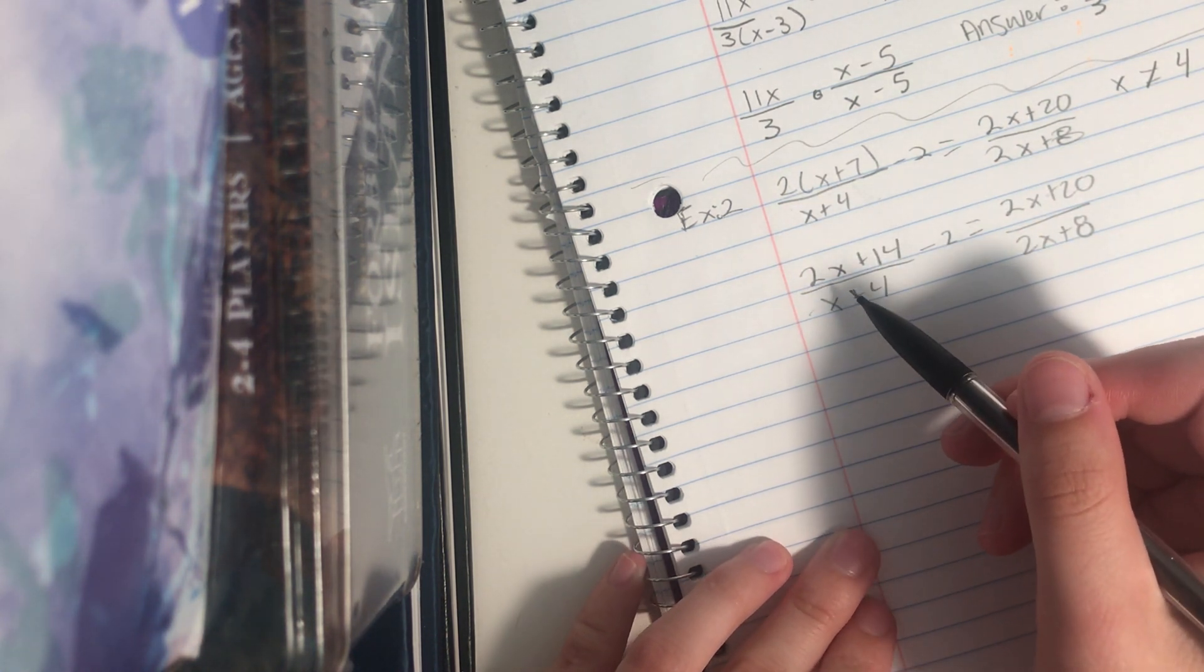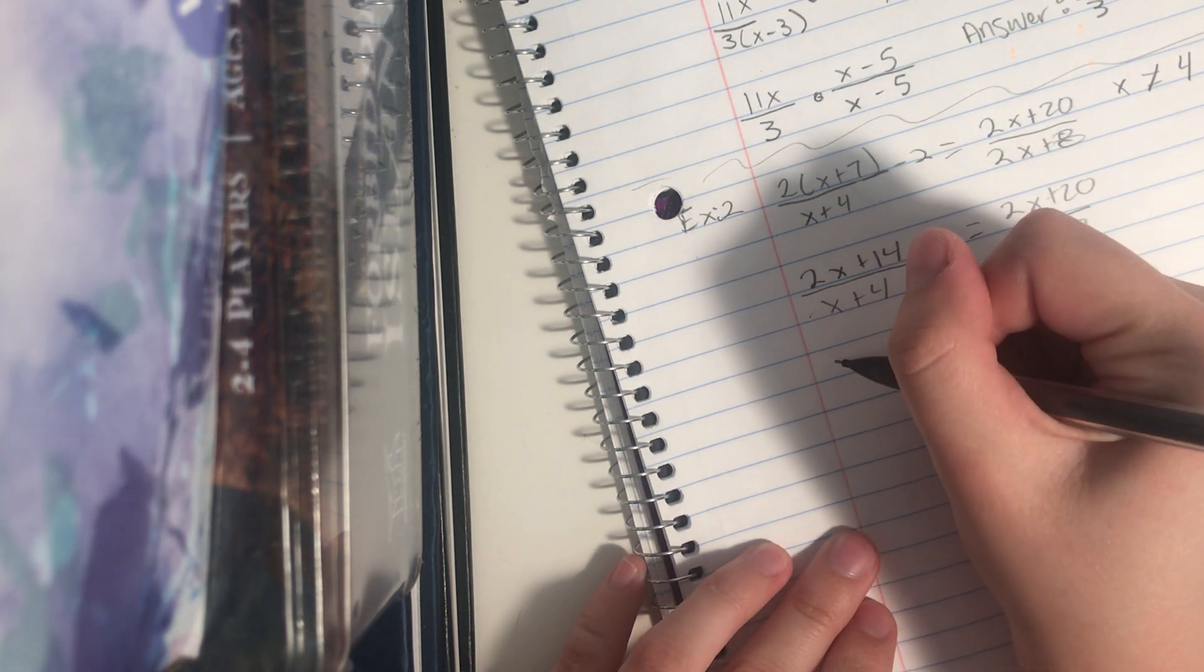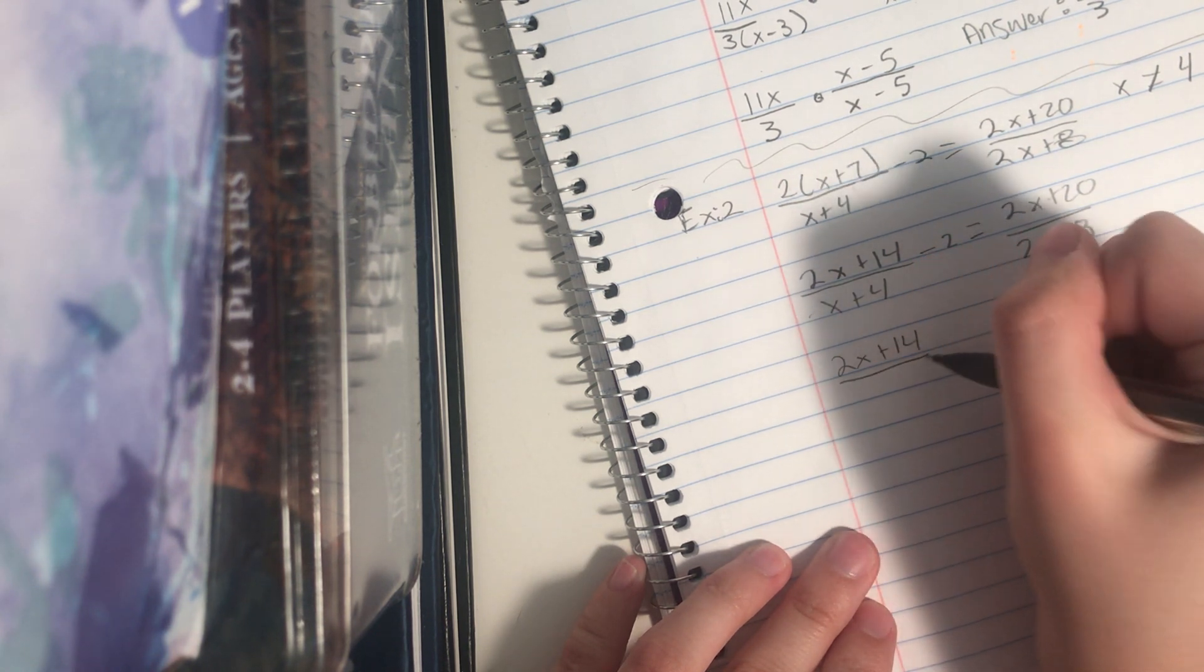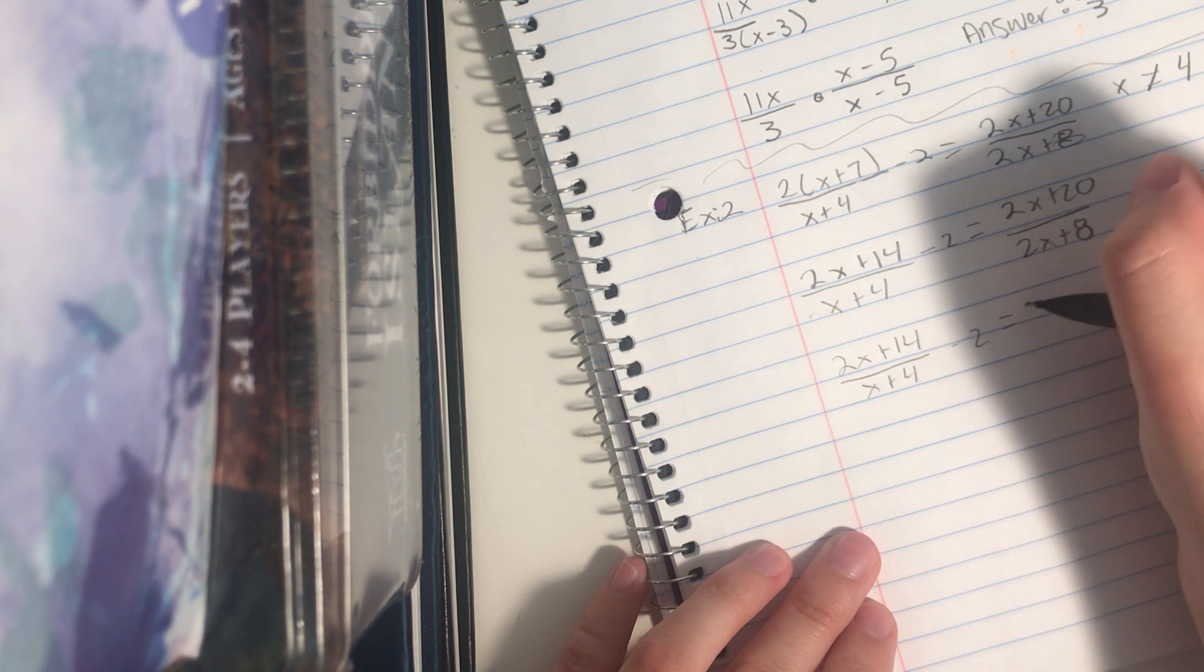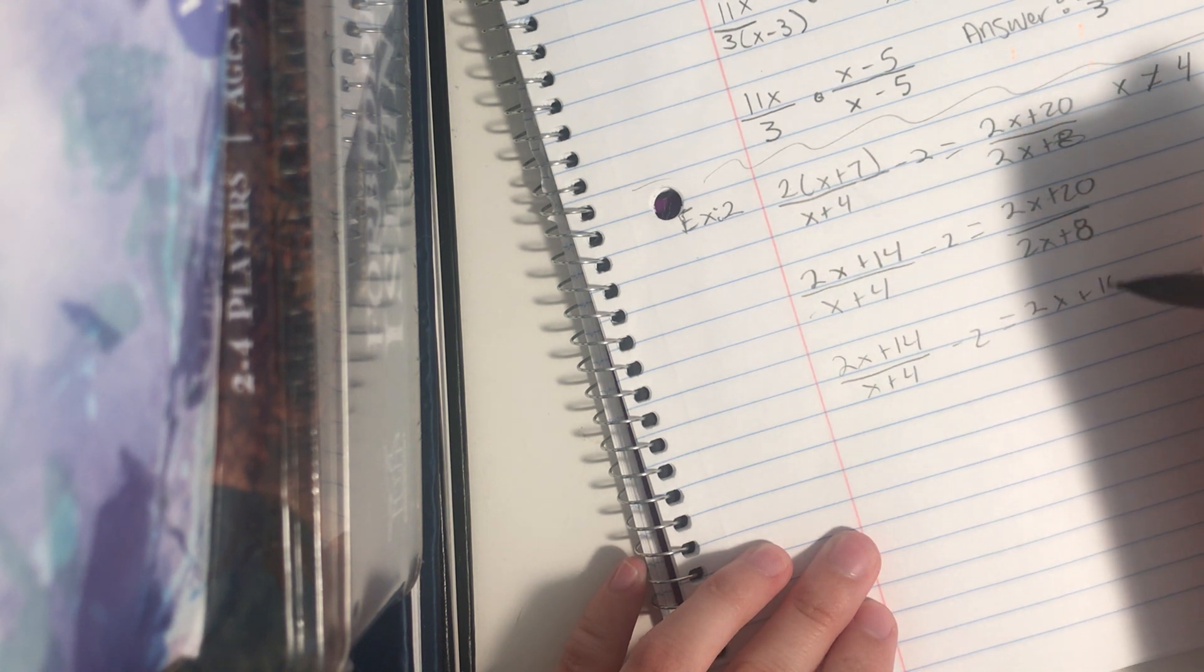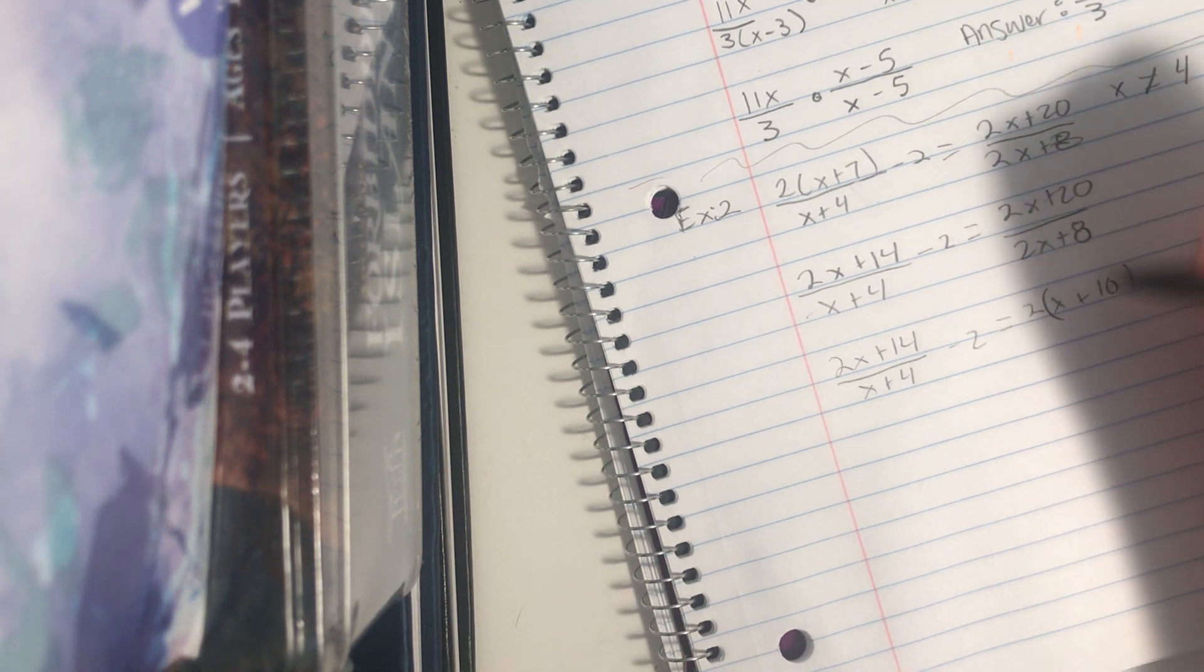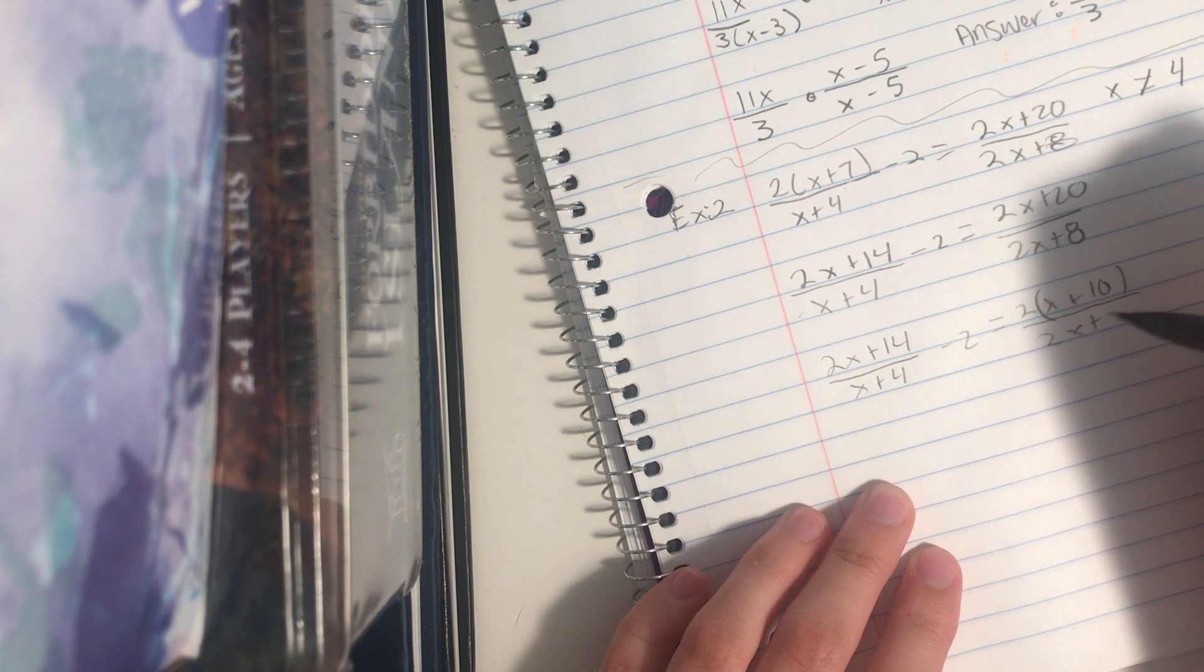Then I want to factor out 2. When I factor out 2, I have 2x plus 14 over x plus 4 minus 2 equals 2 times x plus 10 over 2 times x plus 4. x plus 10 is in parentheses because I distributed it between these.